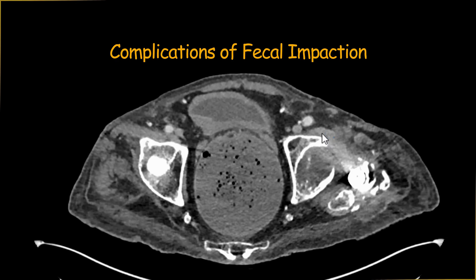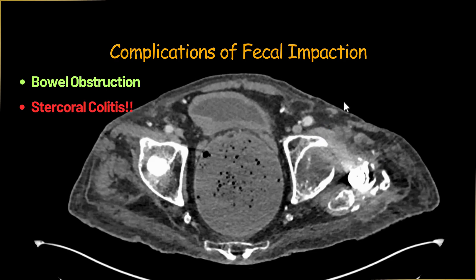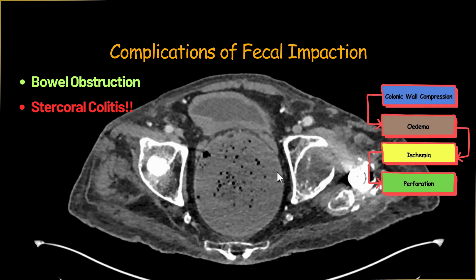Now we need to look for complications related to impacted fecal matter. Beyond bowel obstruction, the more worrisome consequence is the development of stercoral colitis. Stercoral colitis is a condition in which hardened fecal matter compresses upon the wall of the involved colonic segment, resulting in edema due to obstruction of its blood supply. This can eventually lead to ulcer formation, ischemia, and perforation — which has a very high associated mortality rate reaching up to 35%.